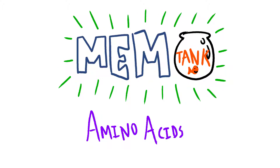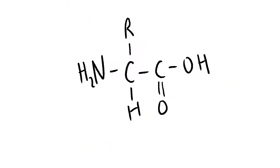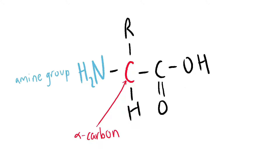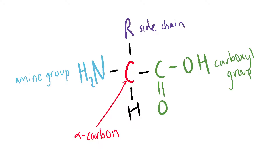All amino acids look like this. They have a central carbon called alpha carbon, an amine group, a carboxyl group, and a side chain that is different for each amino acid.